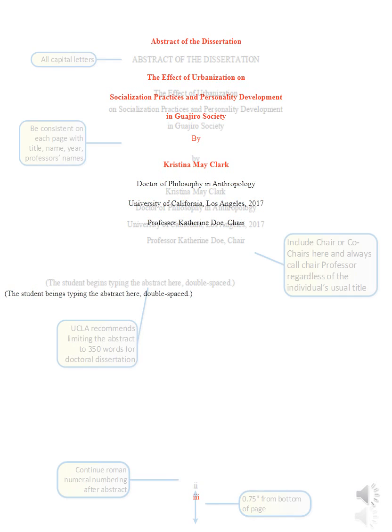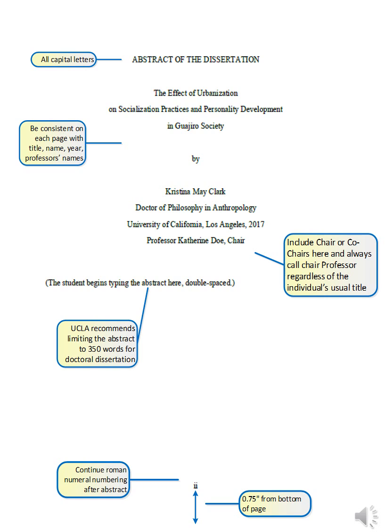Here is one example of an incorrect abstract page. As with the title page, there can be no bolding of any text. The "Abstract of the Dissertation" title must be in all capital letters. All of the preliminary pages must be double-spaced, including the title and your student information. The "be" and "by" must be lowercase and page numbers begin with Roman numeral 2, not 3. Here is another example of an abstract page with commonly seen errors. There should be no bolding, the abstract title must be in all capital letters, the "be" and "by" must be lowercase, margins must all be one inch, and page numbers begin with lowercase Roman numeral 2. As a reminder, here is how the abstract page must appear.